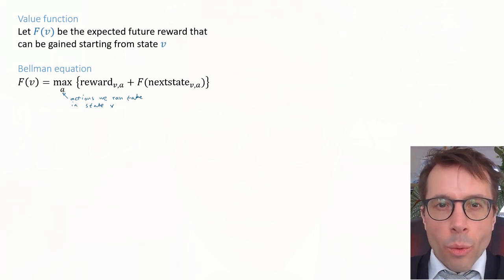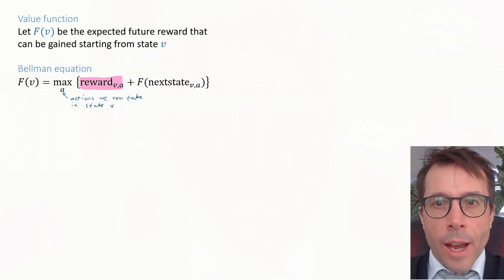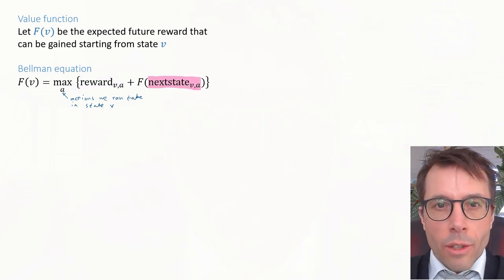This equation says that when we are in state V we have a choice about our next action, let's call it A. When we pick a particular action we'll get some immediate reward—that's this first term here—an immediate reward that's a function of our current state V and the action we're taking. And then we'll transition to some new state, that's this term here. The next state depending on where we are now and what action we took. And from that next state onwards there's a certain amount of future reward that we're going to gain, and that's exactly what the value function f is there to measure.